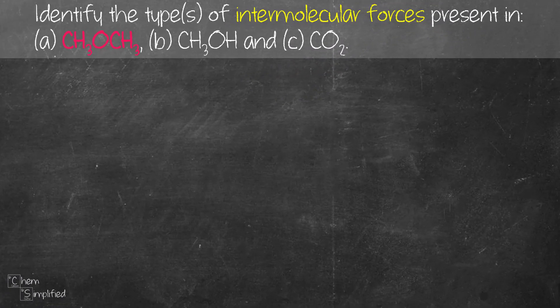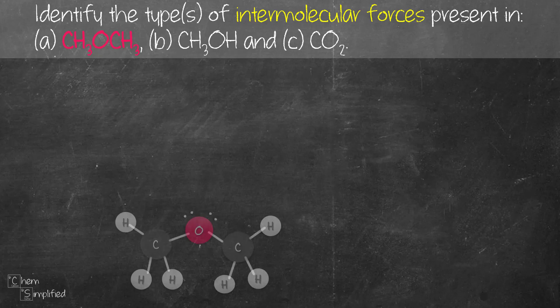Let's start with the first one, CH₃OCH₃. It's an ether that looks like this. We have an electronegative atom, which is oxygen, present in this molecule. However, we don't have any hydrogen that's directly attached to that oxygen. So that means there won't be any hydrogen bonding present between this ether molecule.